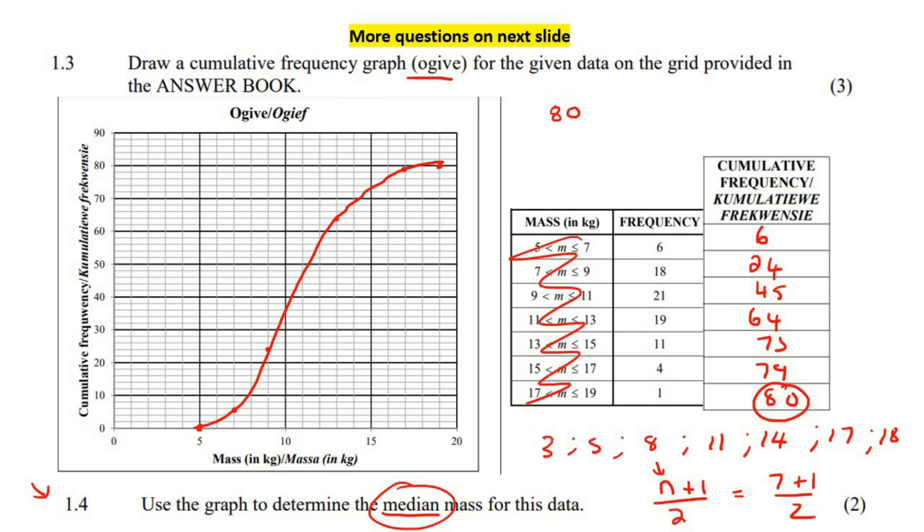So you're going to say 80 plus 1 over 2. And that's going to give you 81 over 2. And that's going to give you 40.5. So you're going to go to a cumulative frequency value of 40.5. So you're not going to go on this axis. You're going to go on this axis. It's really important that you think about that. So you're going to go at about 40, or just above 40. And you're going to read it off there. And then you're going to go down, down, down. And so that's between 10 and 11. So that's going to be 10.5 kilograms.